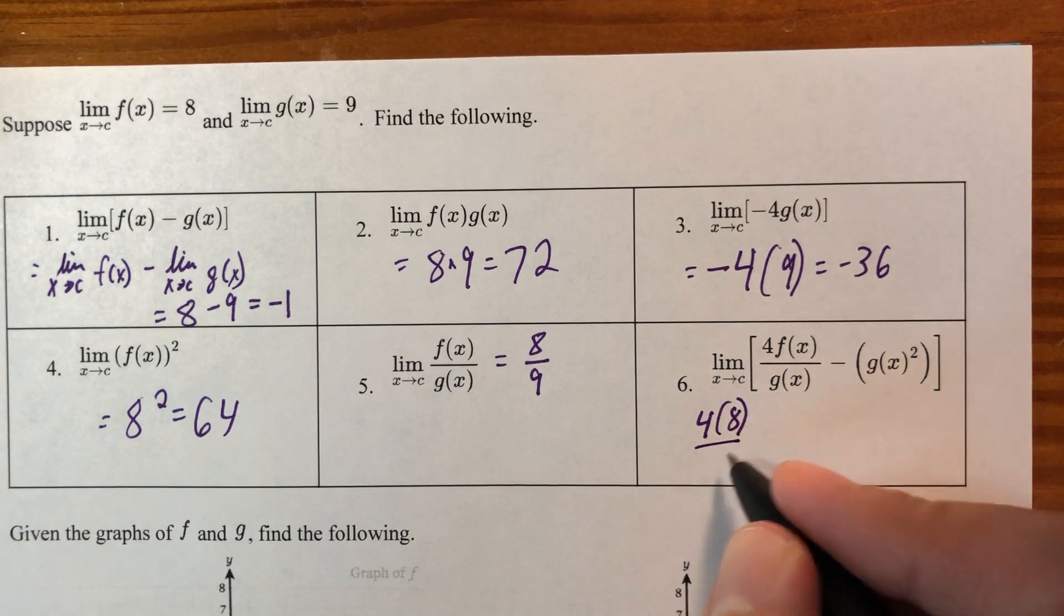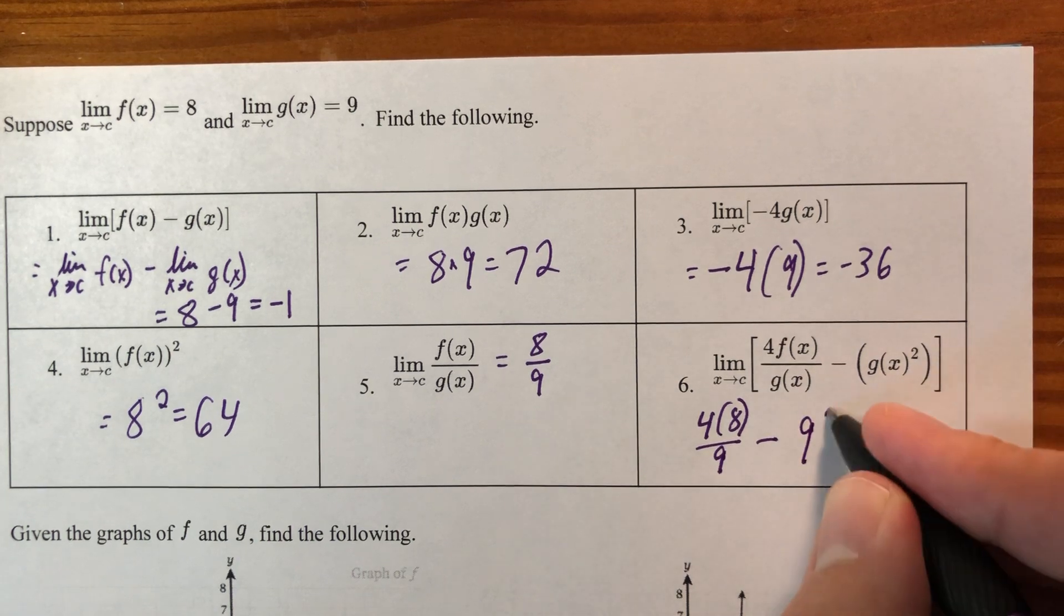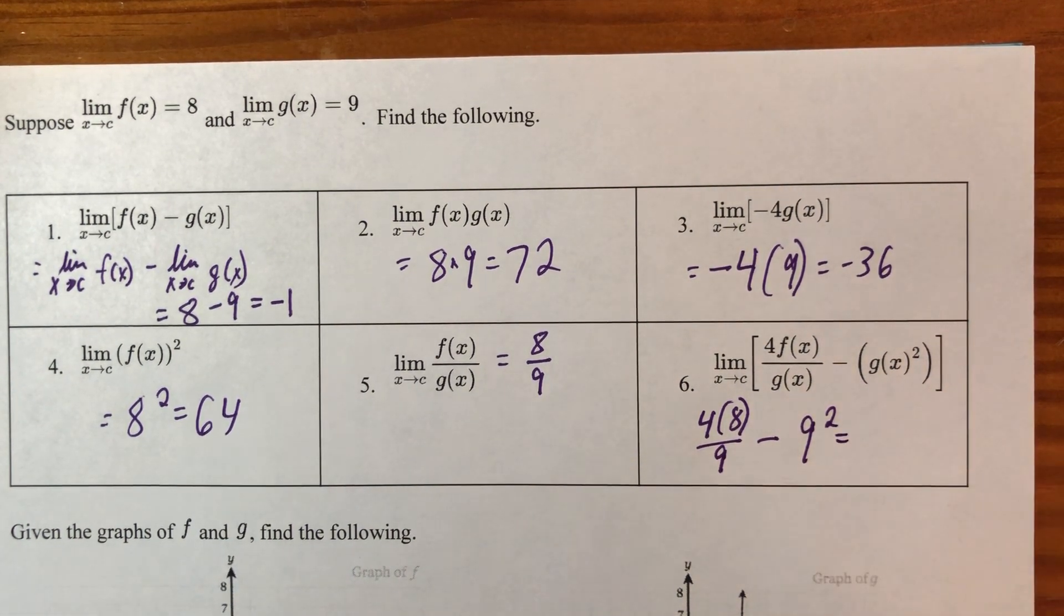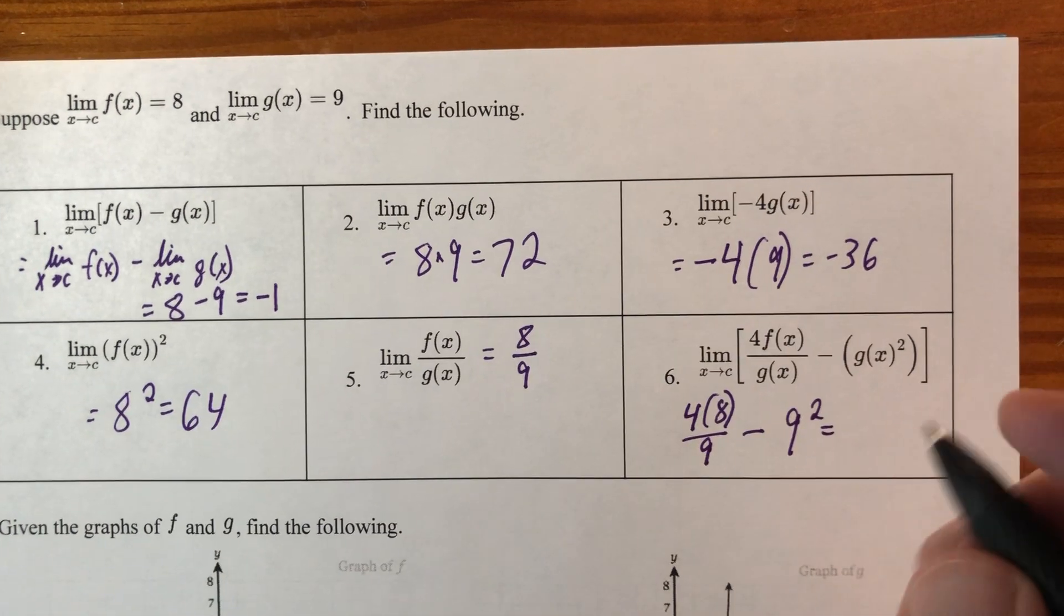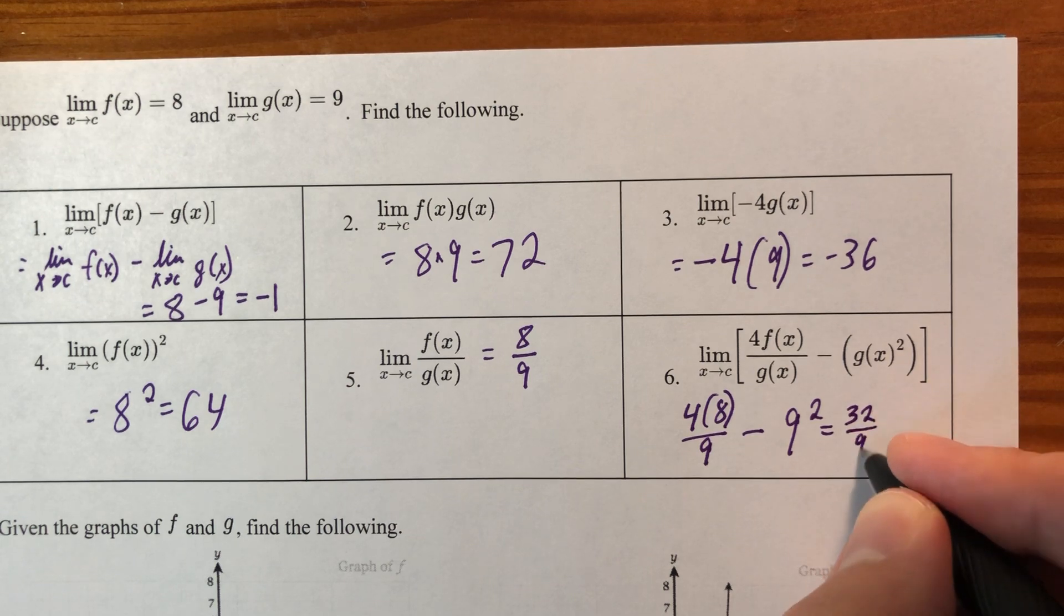And I have already worked this one out. I'll save you the trouble. Let's not worry about all the ridiculous mathematics that have to happen here. Here we have 32 over 9 minus 81, and at one point I had typed this in a calculator, and I got negative 697 divided by 9.